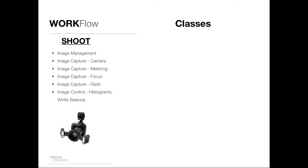Then I talk about image control — how do you know that you're getting all those things right in camera? There are some ways to look at that as you go. One tool is called a histogram; I teach about them, how to read them, what they are, and how to use them effectively. White balance is another big part, and that ties into the color management piece. How do you get the color accurate in camera so you're not tweaking it after the fact? A lot of classes teach, 'we'll just do that later in Photoshop — we'll get the exposure right, we'll get the color fixed in Photoshop.'